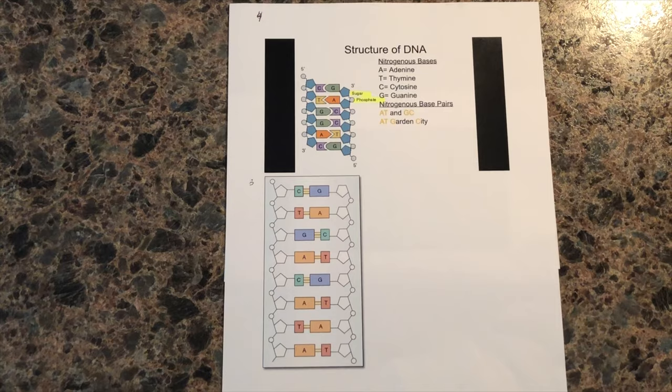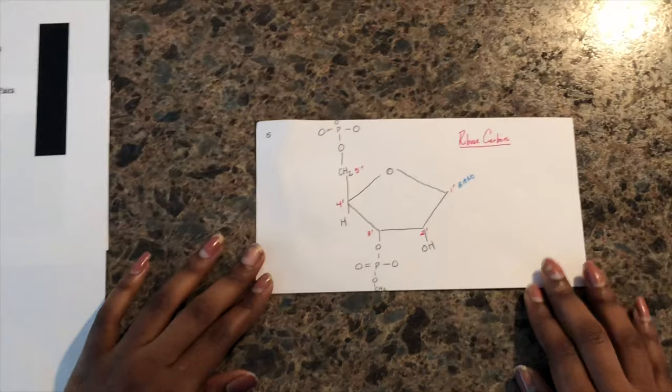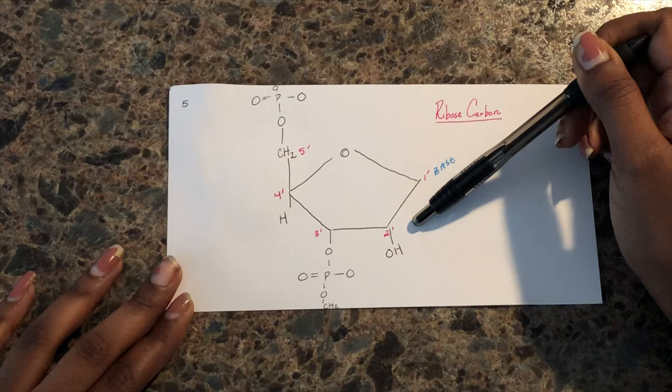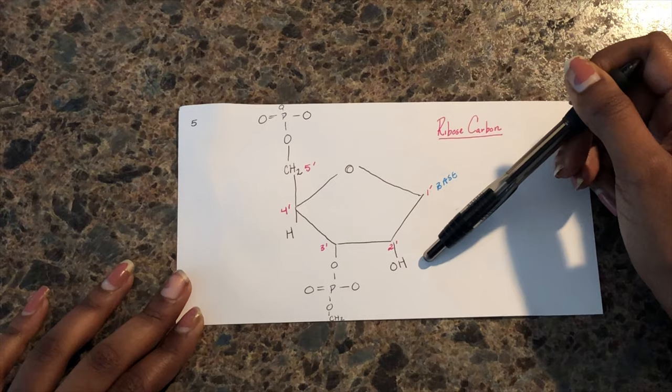Within the phosphate backbone, you will have ribose carbons that make up that structure. The ribose carbons have different attachment sites. For the one prime site, you will have nitrogenous bases attached to it. For the two prime site, you're going to be able to distinguish if this is DNA or RNA. DNA will have an H here because it's deoxyribonucleic acid, and RNA will have an OH here, and oxygen is present.